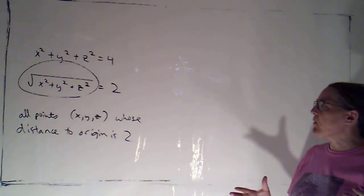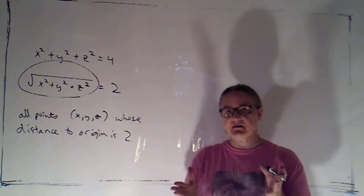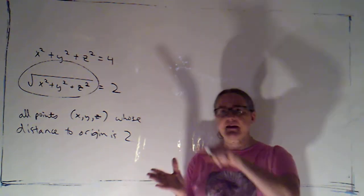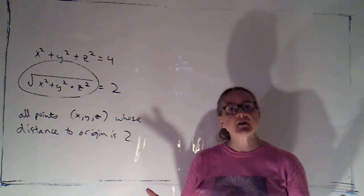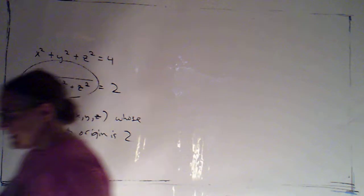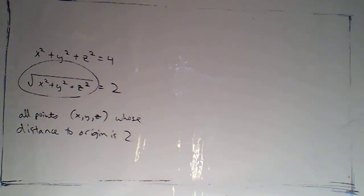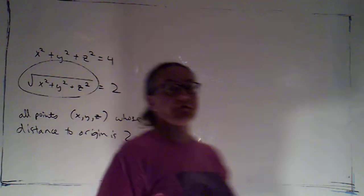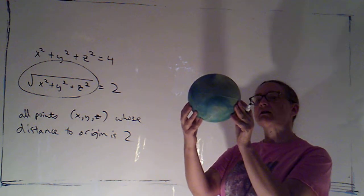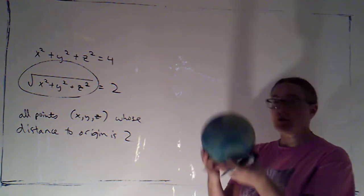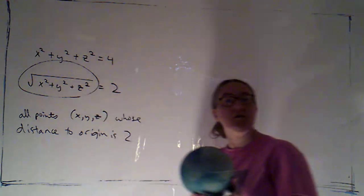So let's think about what we get. If we're in two space and we have the set of all points that are a fixed distance from some point that's in the center, we would get a circle. In three space, if I have the set of all points that are the fixed distance from the origin, I'm going to get a sphere. In this case, it's centered at the origin, because this was the distance to the origin.